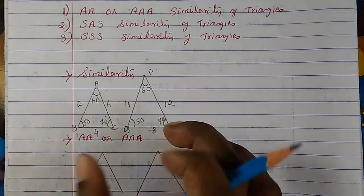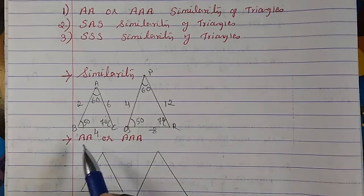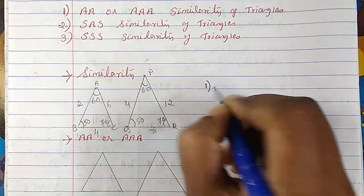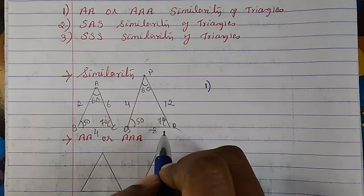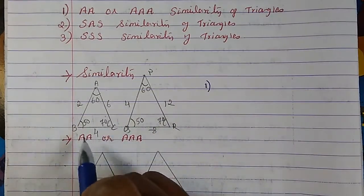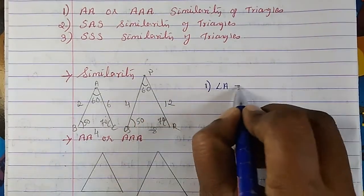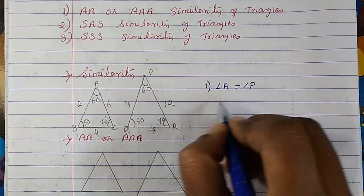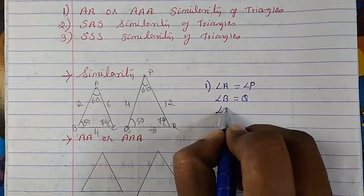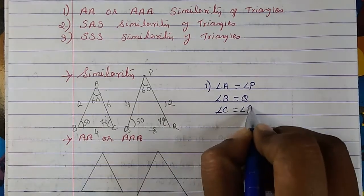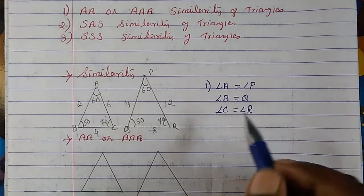When do we say these two triangles are similar? The first condition is that the corresponding angles are equal. Angle A equals angle P, angle B equals angle Q, and angle C equals angle R. So when all three corresponding angles are equal, that is one condition for similarity.